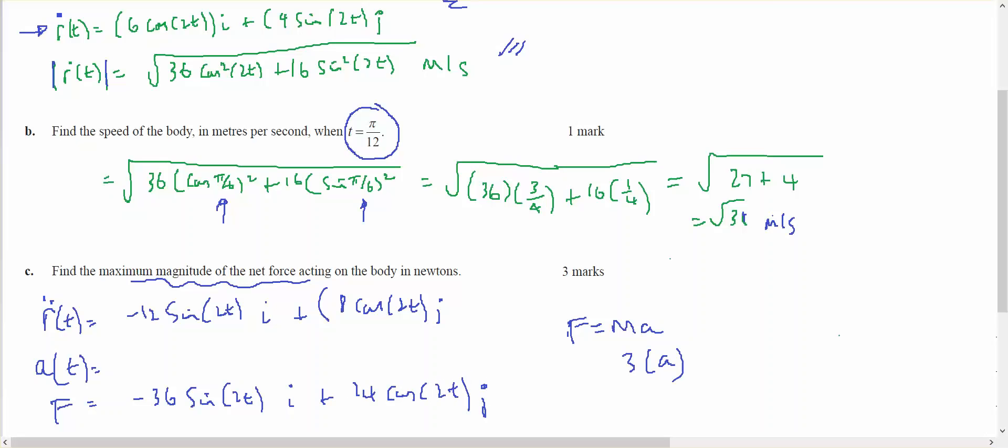And I'm looking for the largest magnitude, whether it's positive or negative. What I do know is that some of these values, sine's minimum will be 0, which means that will give me a force of 24. When this is 0, that would give me a force of 36. And when I add them together, I'm not going to get higher than 36.